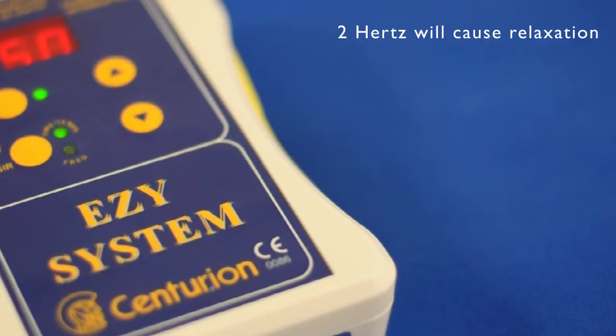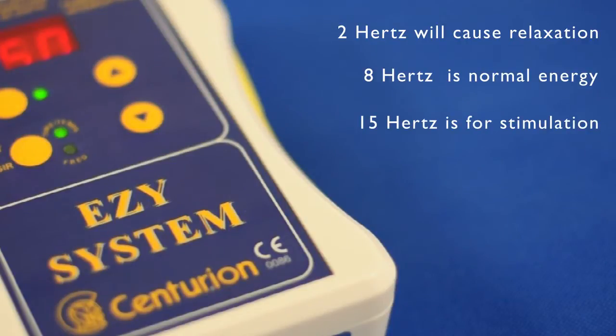The parameters are as follows: Two hertz will cause relaxation and aid in the reduction of edema. Eight hertz is normal energy and often referred to as the Schumann frequency. Fifteen hertz is a stimulation setting. Thirty hertz will increase body energy. To learn more about the frequency settings and session protocols, please refer to your manual.